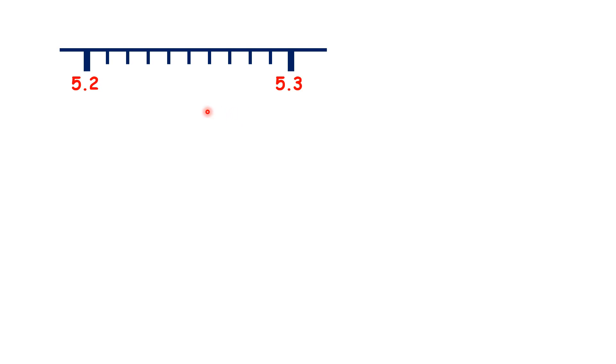And this makes sense, because we know that on a number line, between tenths, we have hundredths, so the number right in the middle must be 5.25.